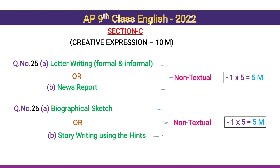Section C: Creative Expression for 10 marks. Paper 2 discourses are completely non-textual — mostly from contemporary issues and prevailing situations. Question 25: Letter writing — either formal or informal; the choice is a news report, and the best option is letter writing for 5 marks. Question 26: Biographical sketch or story writing using hints — also non-textual. Best option is story writing using hints; begin with 'Once upon a time' or 'Long long ago,' divide matter into paragraphs, and write the moral of the story at the end.